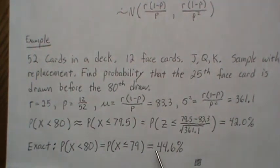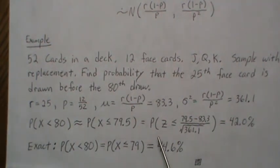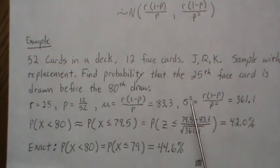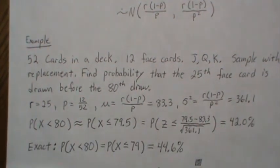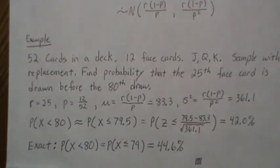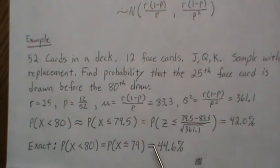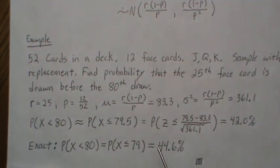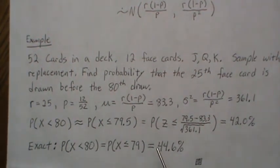So we're pretty close when r is only 25. Now, the beauty of this normal approximation, when r becomes quite large, then that coefficient in front of the negative binomial, that combinations, is really not even doable.